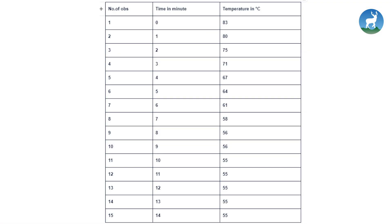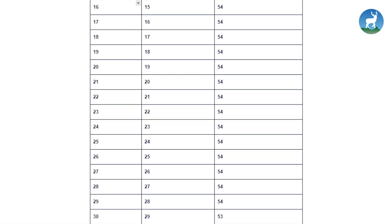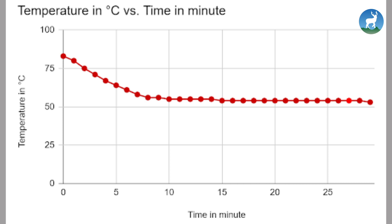Here is the calculation table for finding the melting point of the solid. We have taken 30 observations. From the cooling curve, the melting point of the solid is determined to be 57 degrees Celsius.